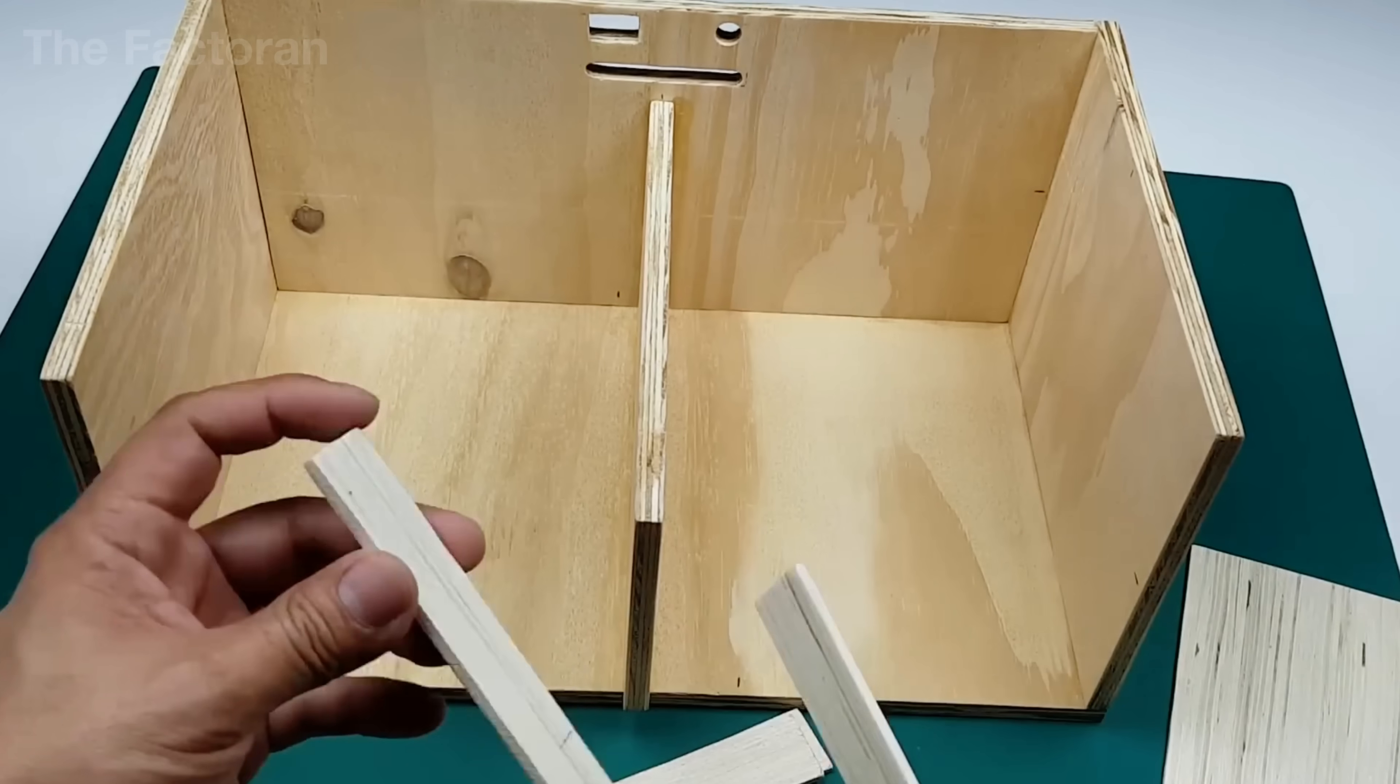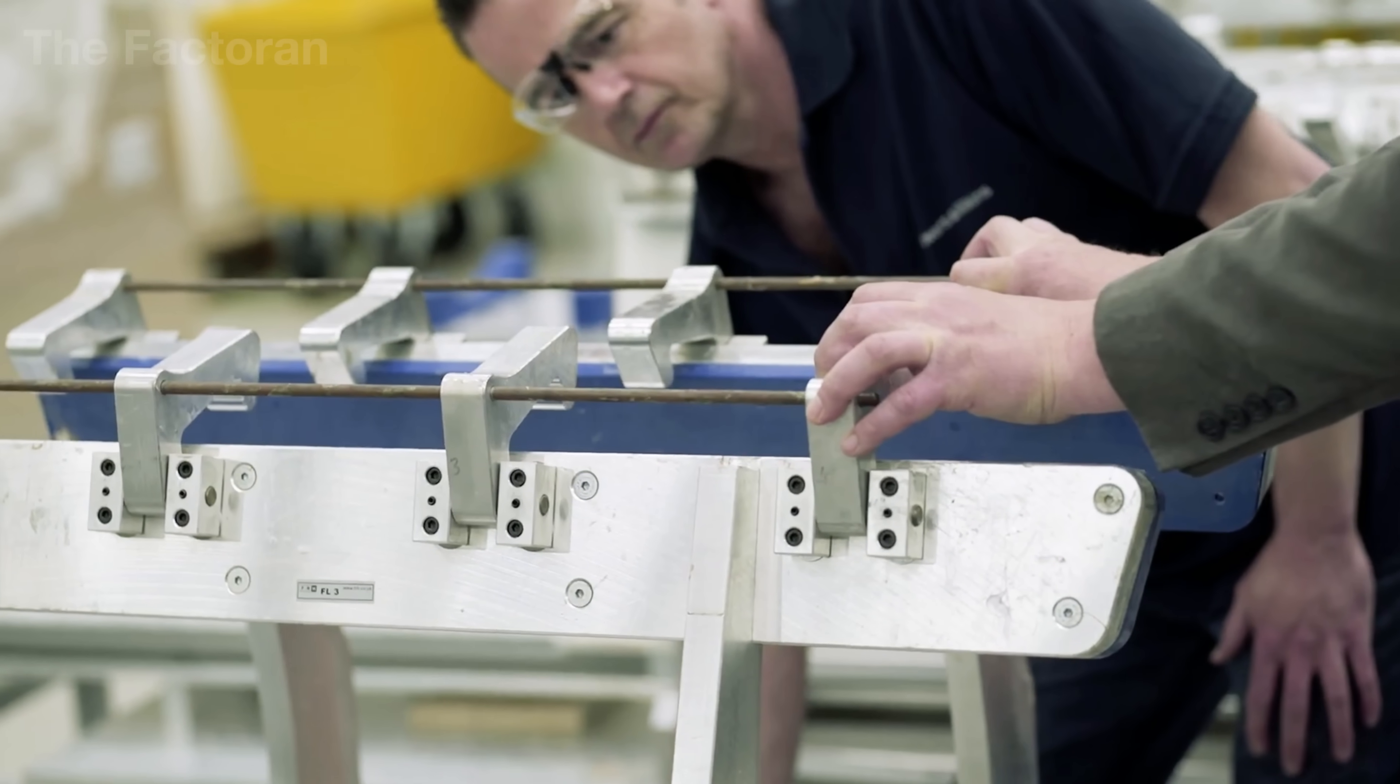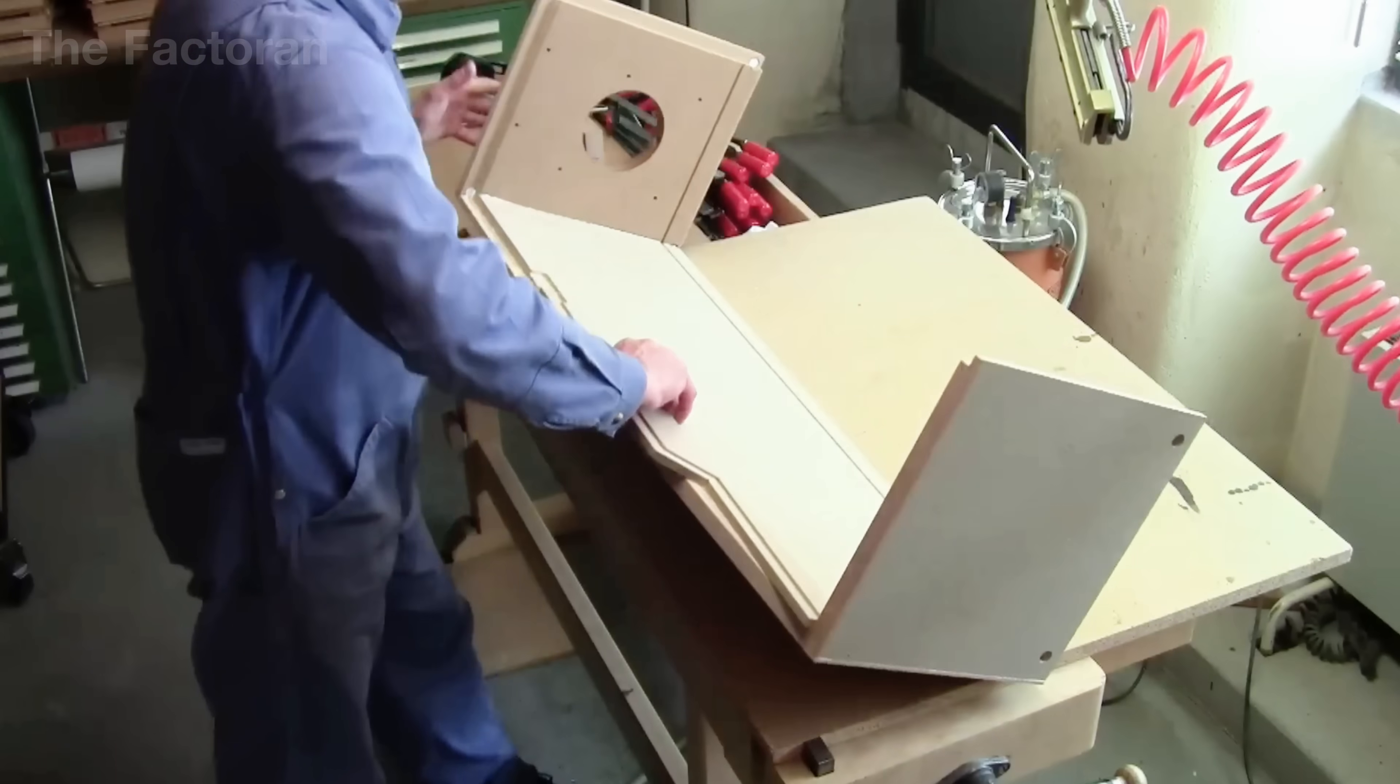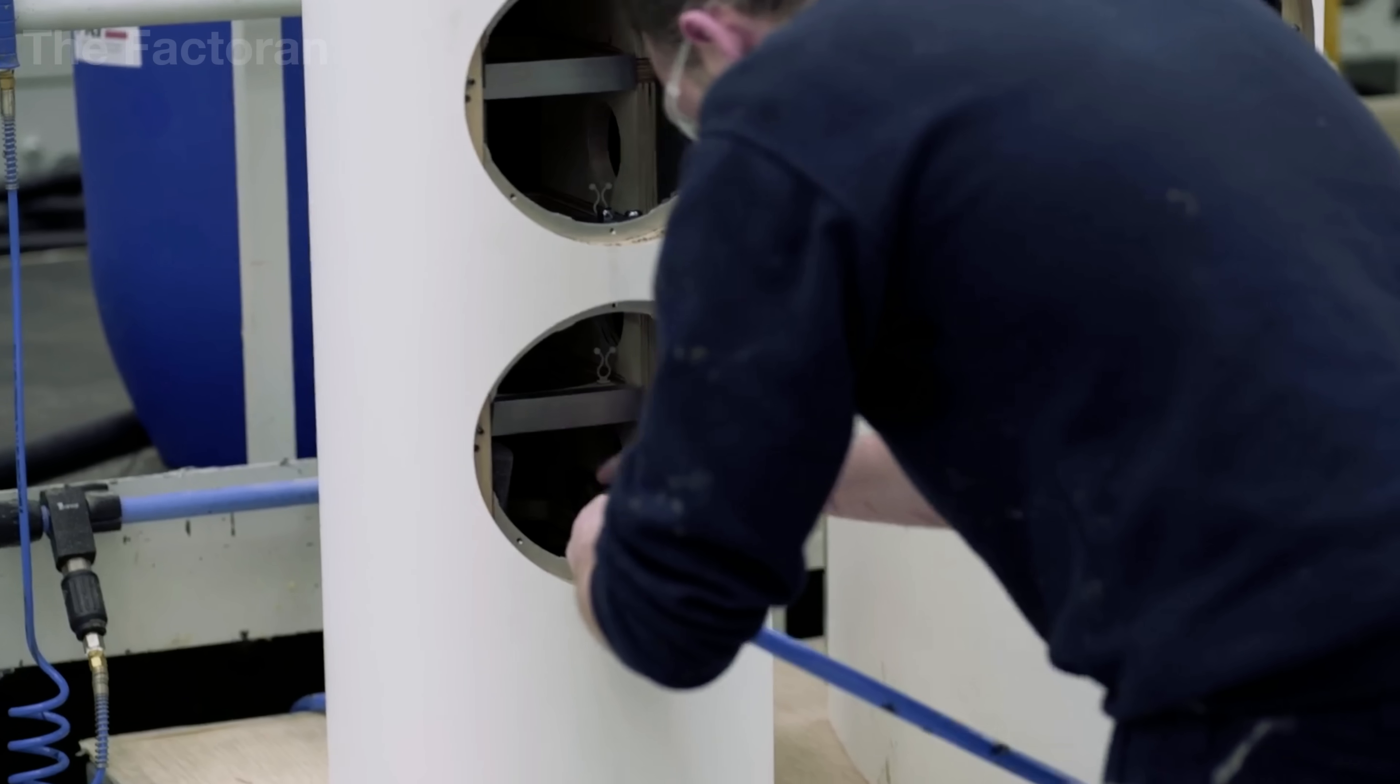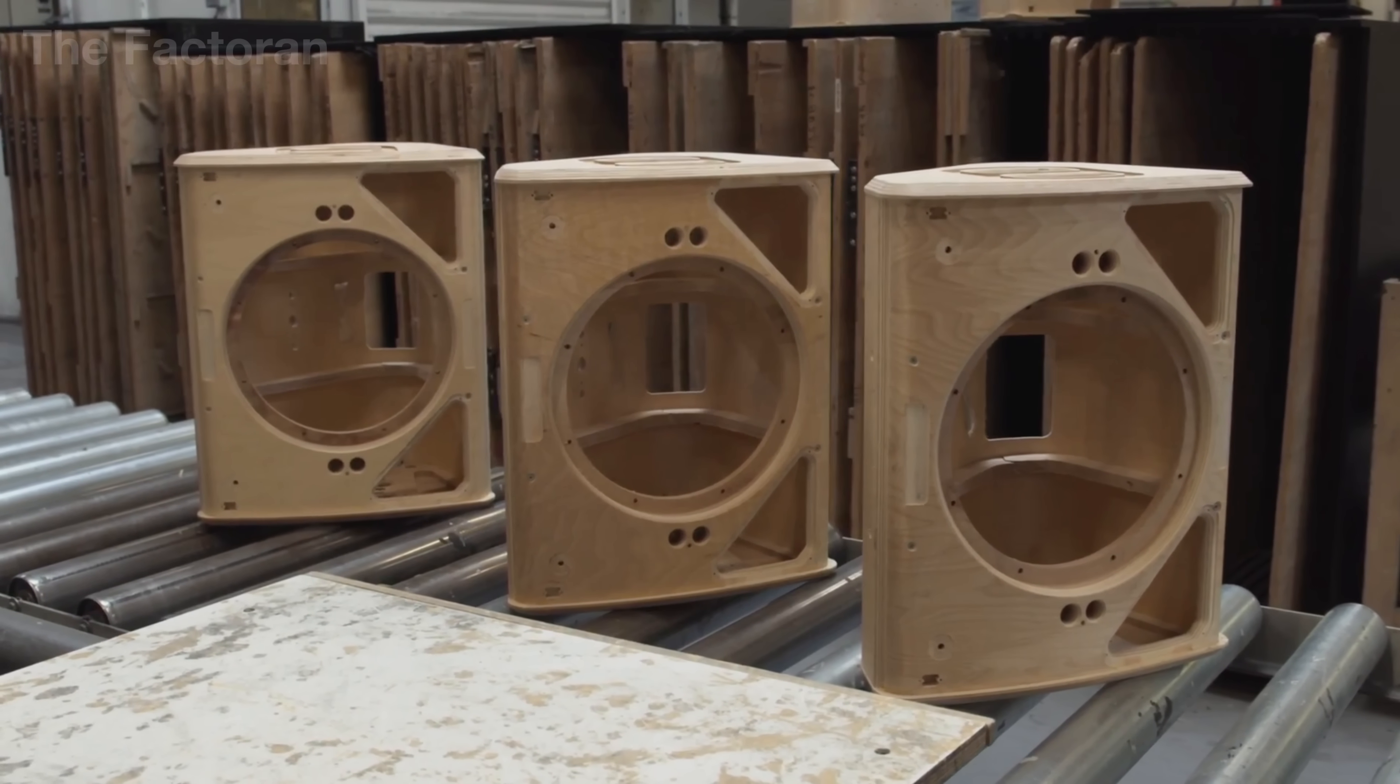Inside the enclosure, structural braces are strategically placed at high resonance points, accompanied by damping materials such as acoustic foam or mineral wool. These elements reduce internal standing waves and suppress unwanted resonance, resulting in a cleaner, more controlled output.